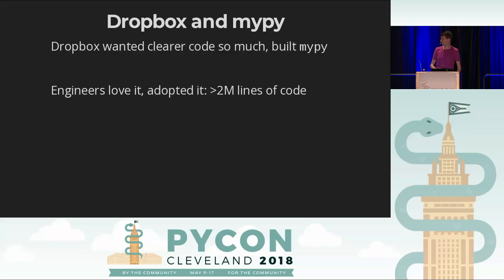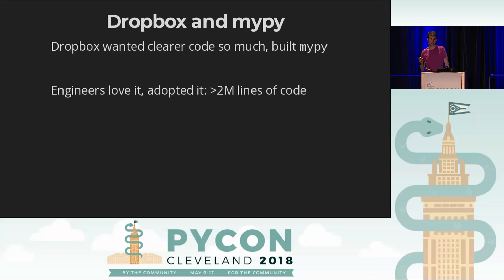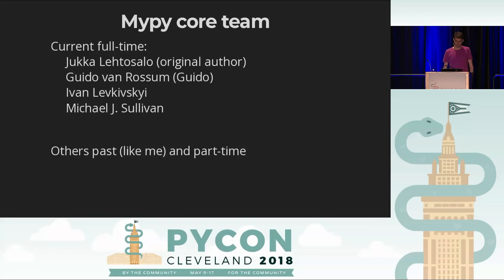I'll be telling you about one of the technologies we use for that. At Dropbox, we wanted clearer code. We knew from surveys that 40% of the time our engineers spent doing engineering was reading code and trying to understand it — a huge part of everyone's day. When we can make that better, it has a big impact. That's why we built MyPy there. Dropbox engineers loved it — it's now on over 2 million lines of Python code, statically typed. There's a full-time team at Dropbox of four people, including Jukka and Guido, because the company values it so much.